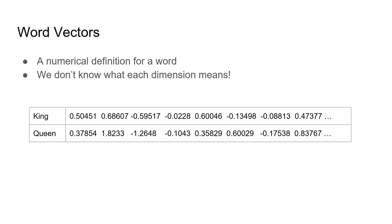I've switched the example to 'king' and 'queen' — you'll see why in a couple of slides. What you're looking at here are the word vectors for 'king' and 'queen.' This is how a computer understands a word: it understands 'king' as 0.50451, 0.68607, and so forth. A word vector is the numerical definition of what it is to be a word, the same way we had a numerical definition of what it was to be an animal — but the difference is we don't actually know what each dimension means.